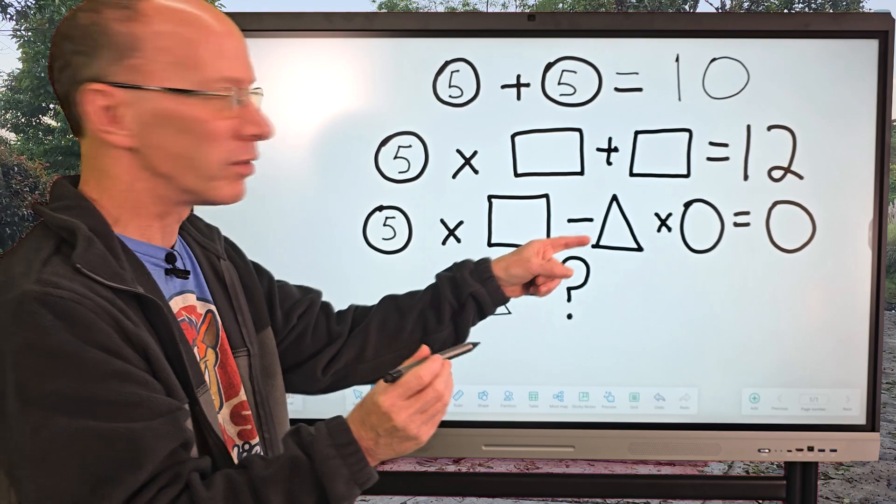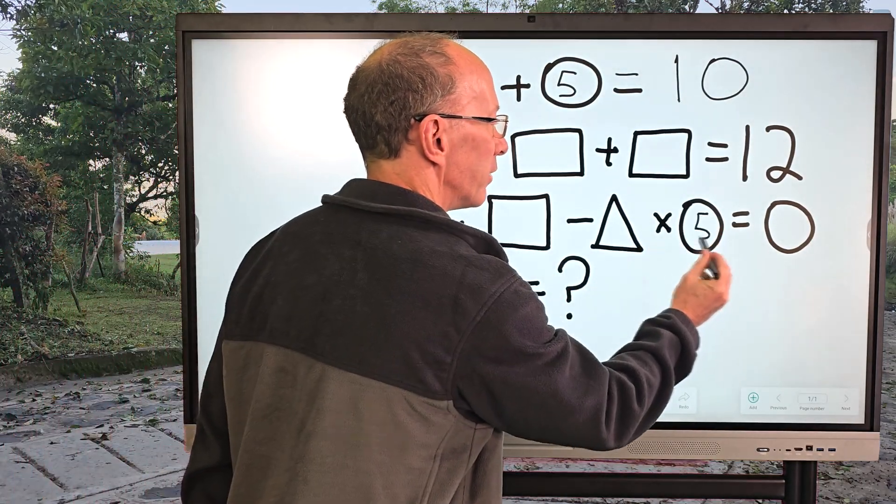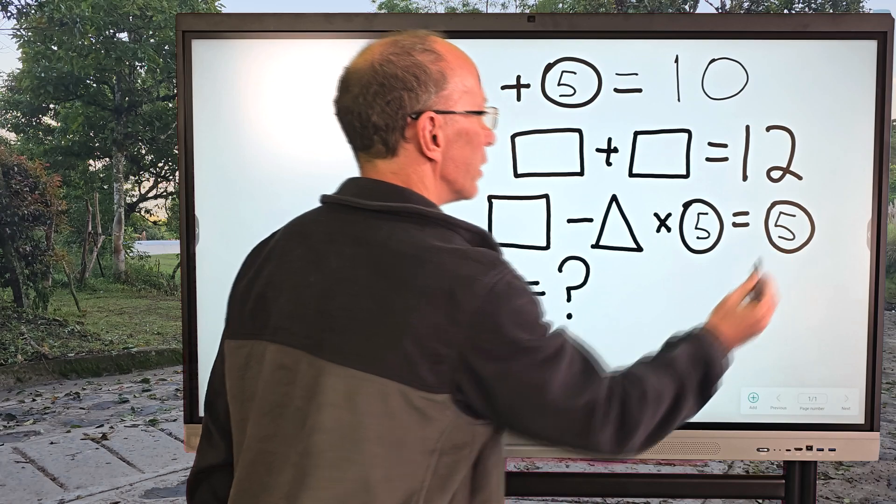So here's a number five, another five. Do we have any other circles? Right over here, we have a circle. So here's a five here and a five here.